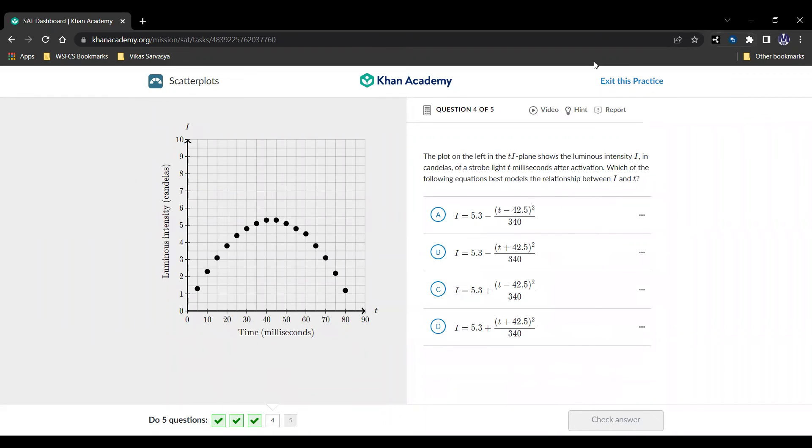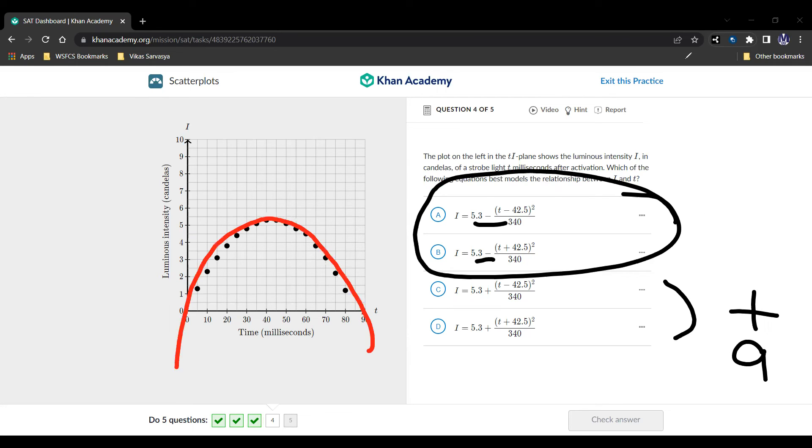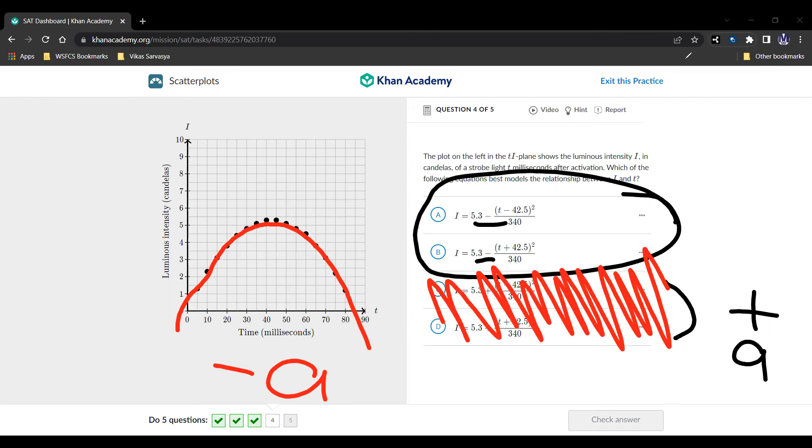And we can move on to the next question. All right, next question. Here we are. And here it is. We have a graph of luminous intensity in candelas versus time in milliseconds. And we're supposed to pull that the plot on the left in the ti plane shows the luminous intensity i in candelas of a strobe light t milliseconds after activation, which of the following equations best models the relationship between i and t. Well, these two equations have this minus right here. So we're going to have negative a. These two equations have a positive a. And as we can see in the graph, it opens down. It opens down. Down. So we're going to have a negative a, which means that these are incorrect.